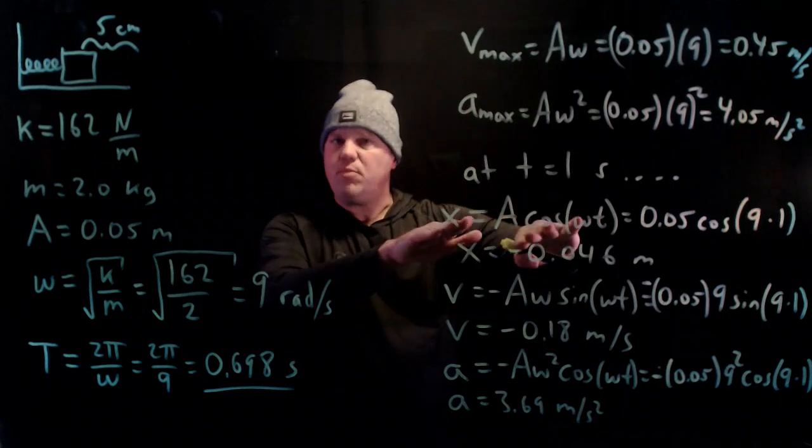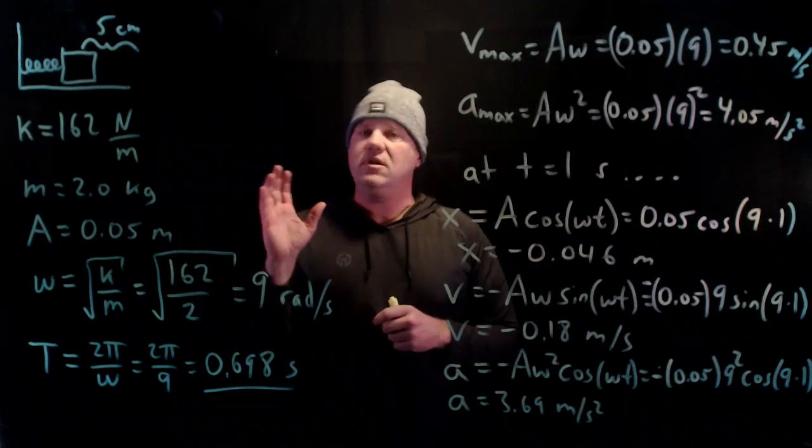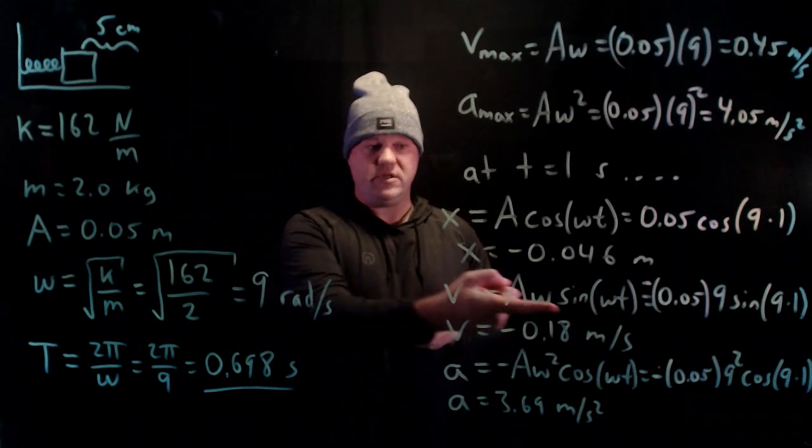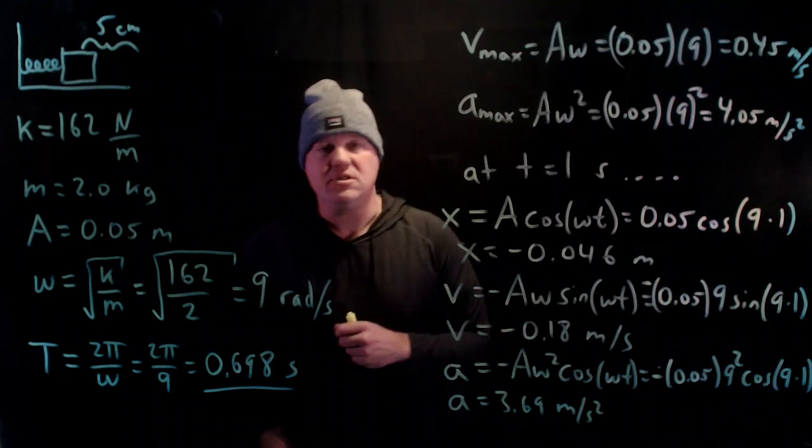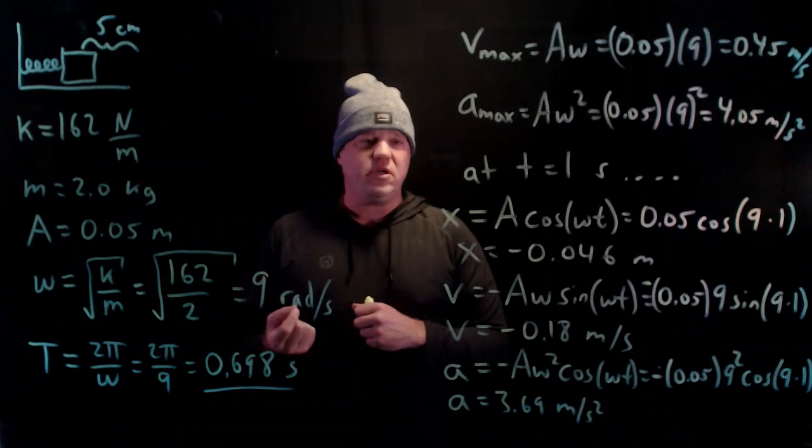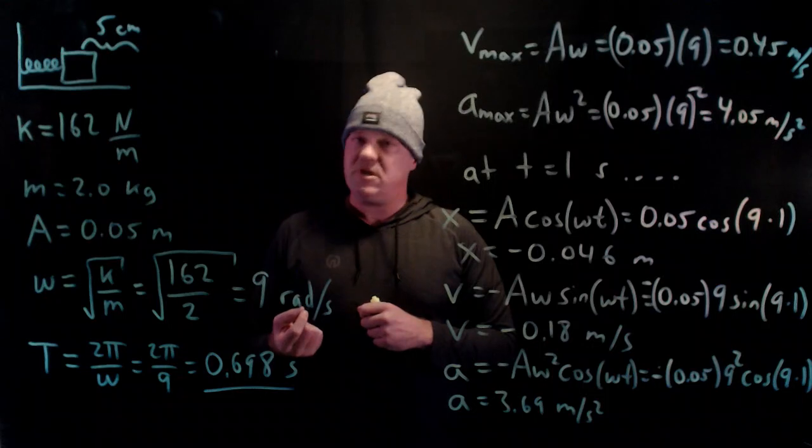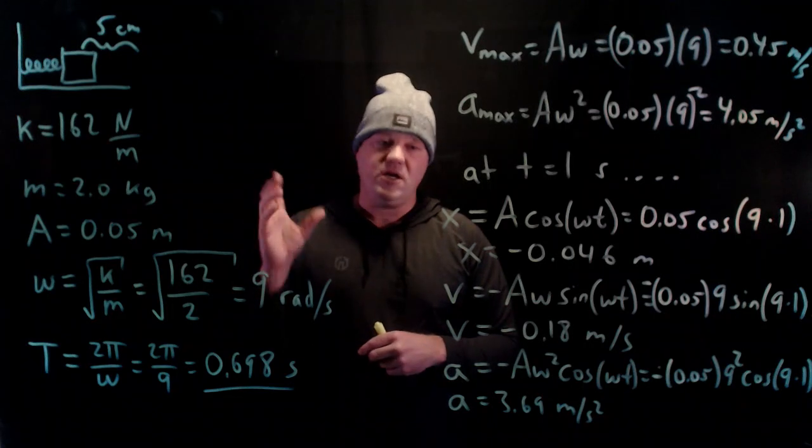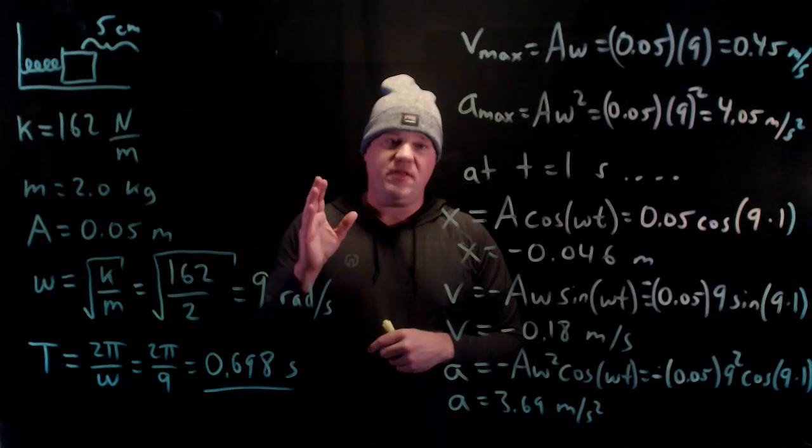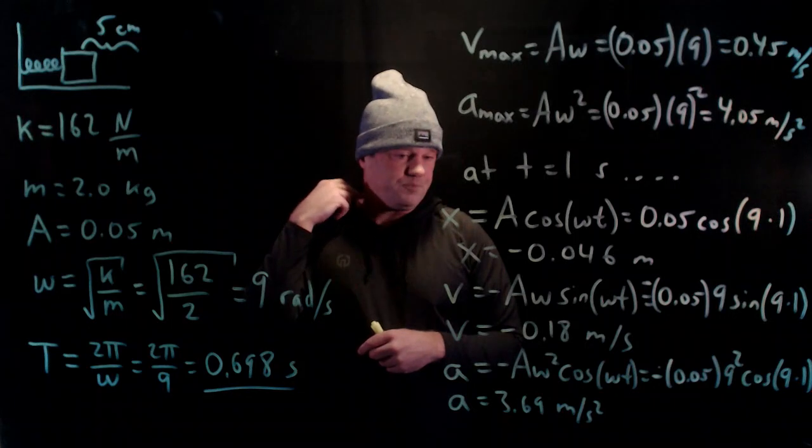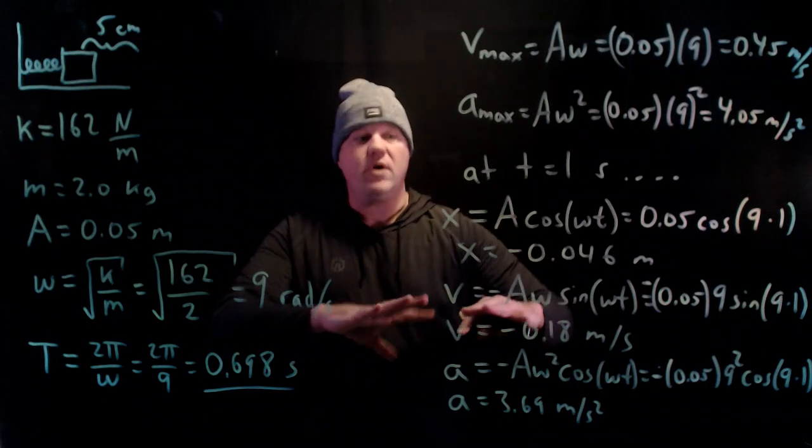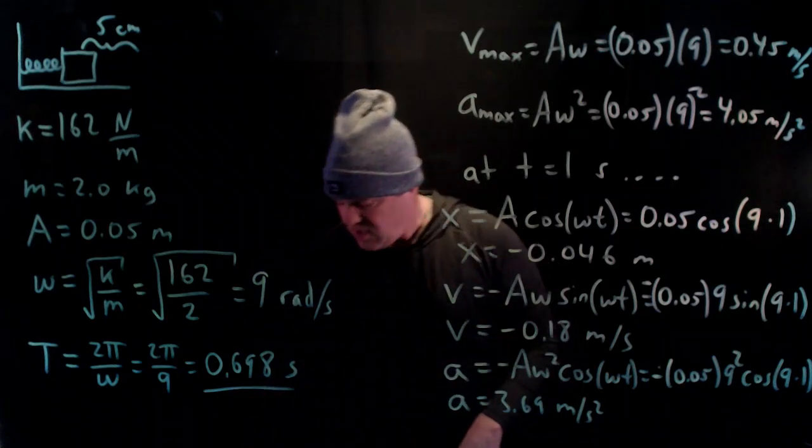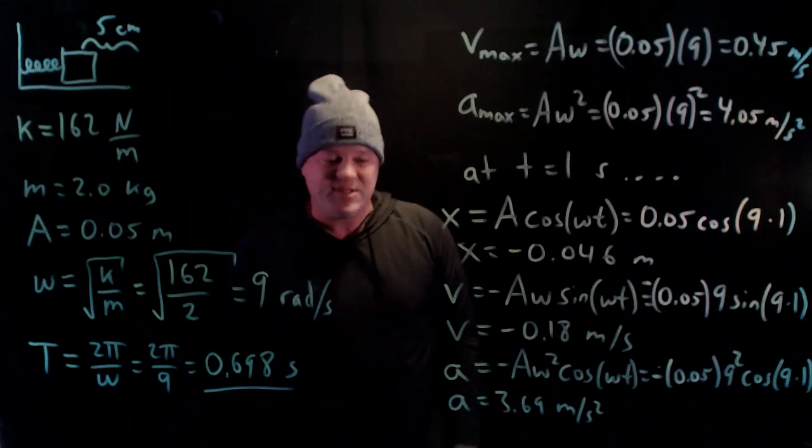These equations assume that the initial displacement is positive to the right and the initial velocity is zero. The sine function starts at zero. This doesn't cover every single possibility for simple harmonic motion. If the initial conditions are different, you'd have to make some adjustments. But for initial displacement that's positive and initial velocity of zero, these equations give you the exact position, velocity, and acceleration as a function of time. All right, that's it. Thanks for watching, I'll see you next time.